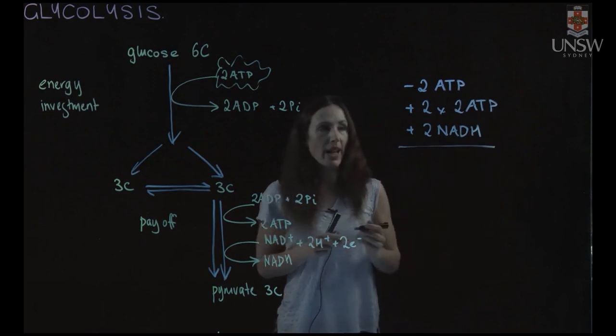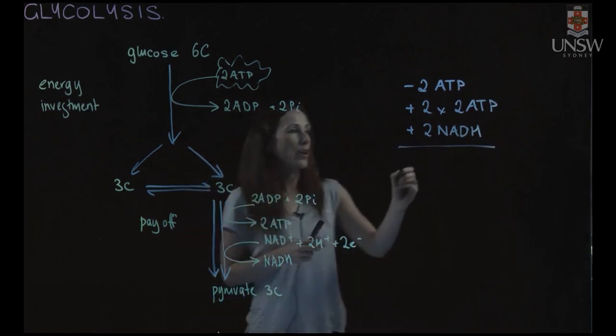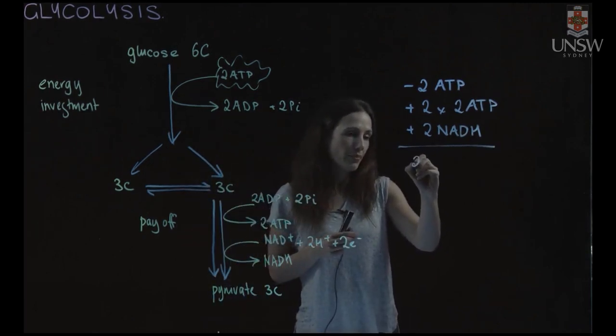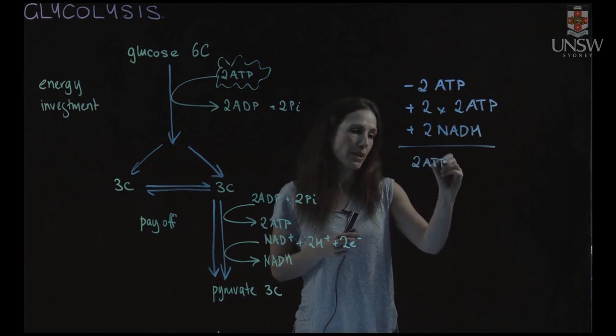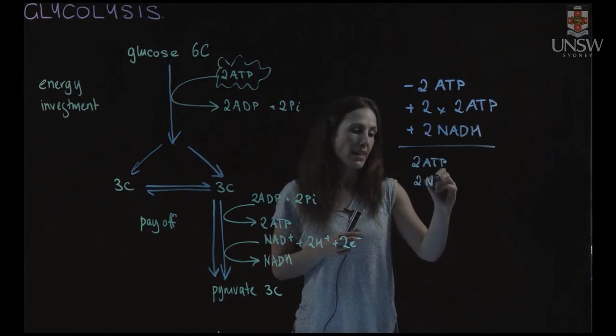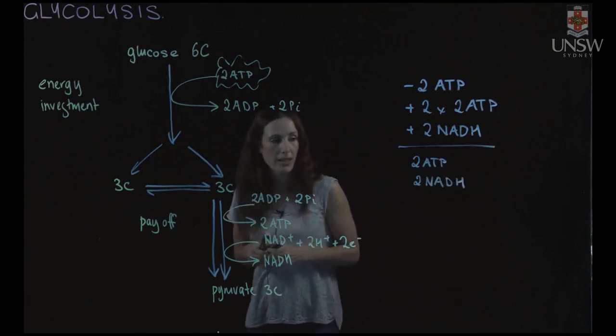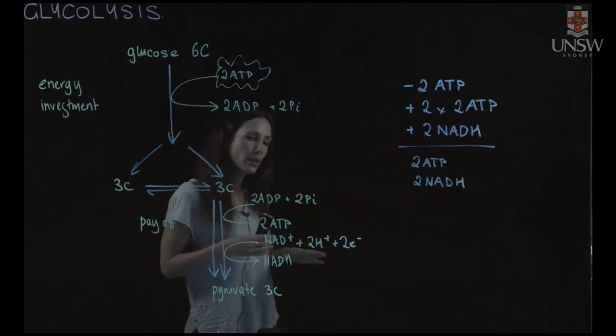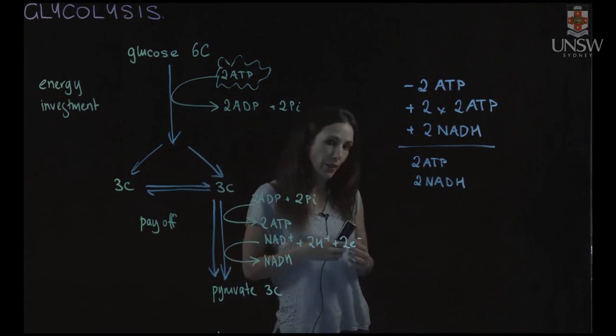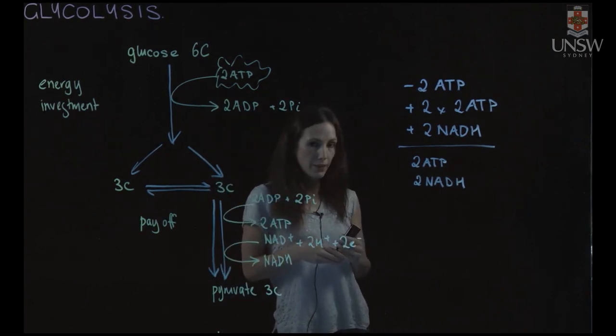So in that reaction what we get is a total of two ATP being produced and two NADH. And NADH is important because it can ultimately be used to power production of further ATP in oxidative phosphorylation.